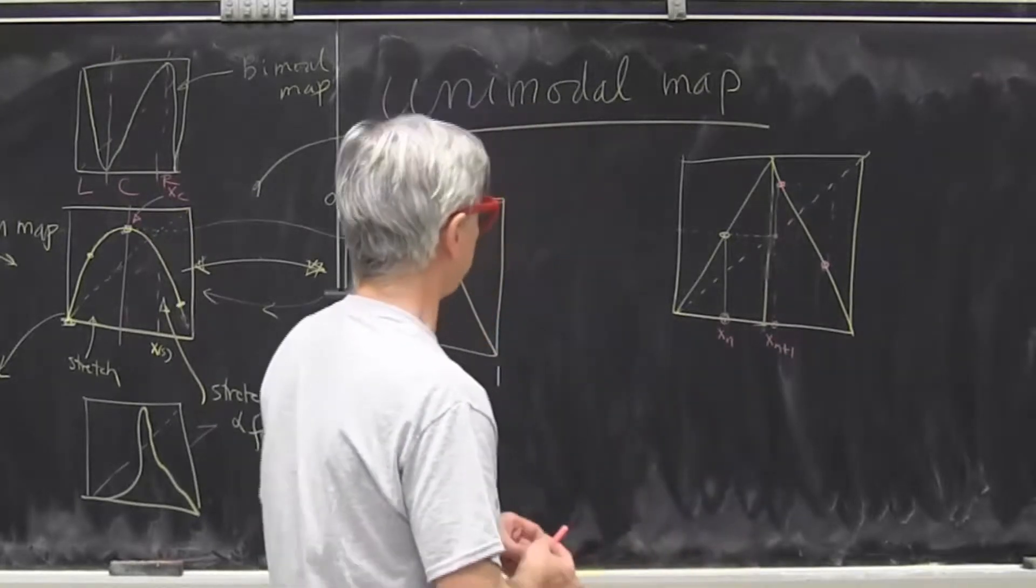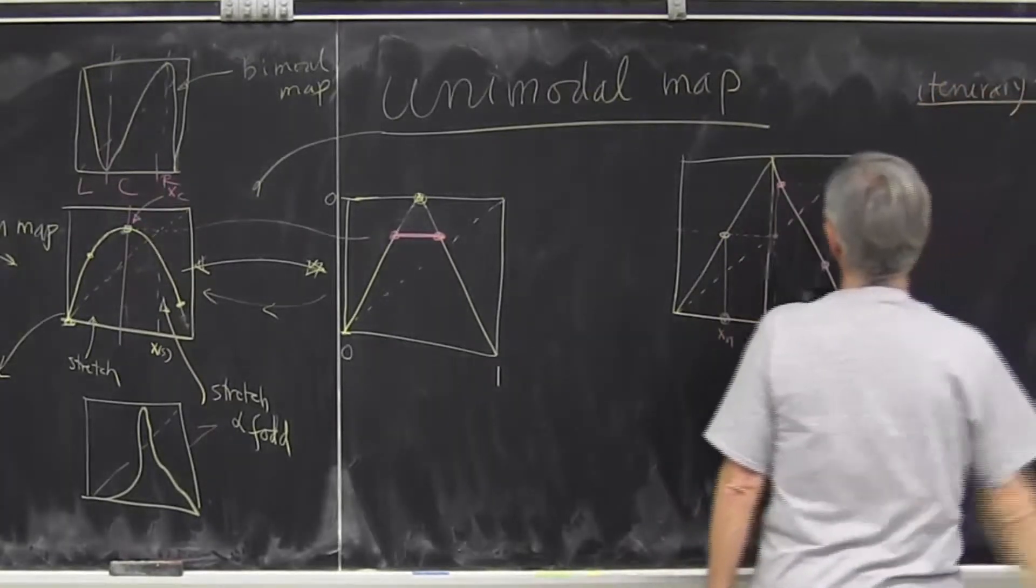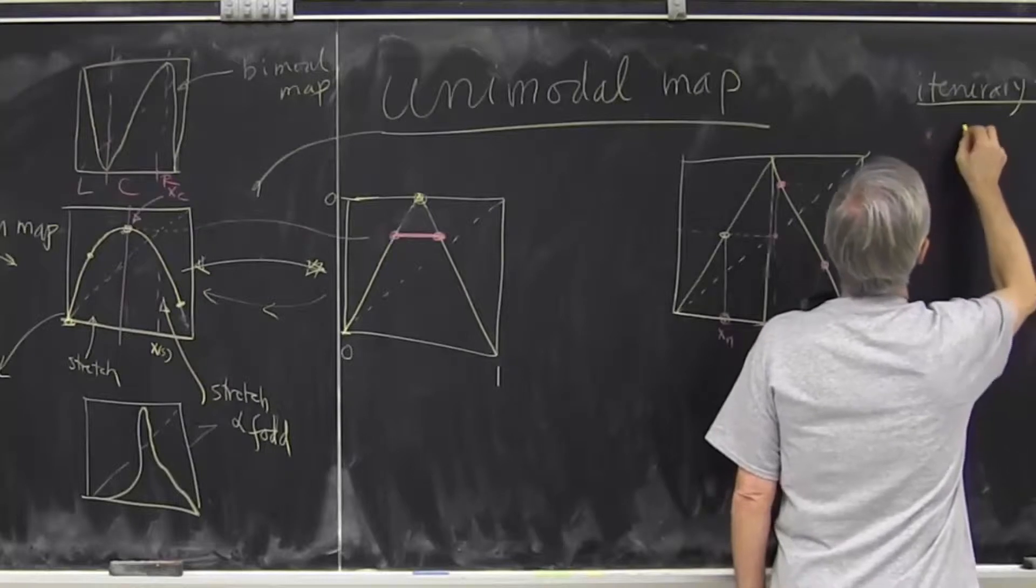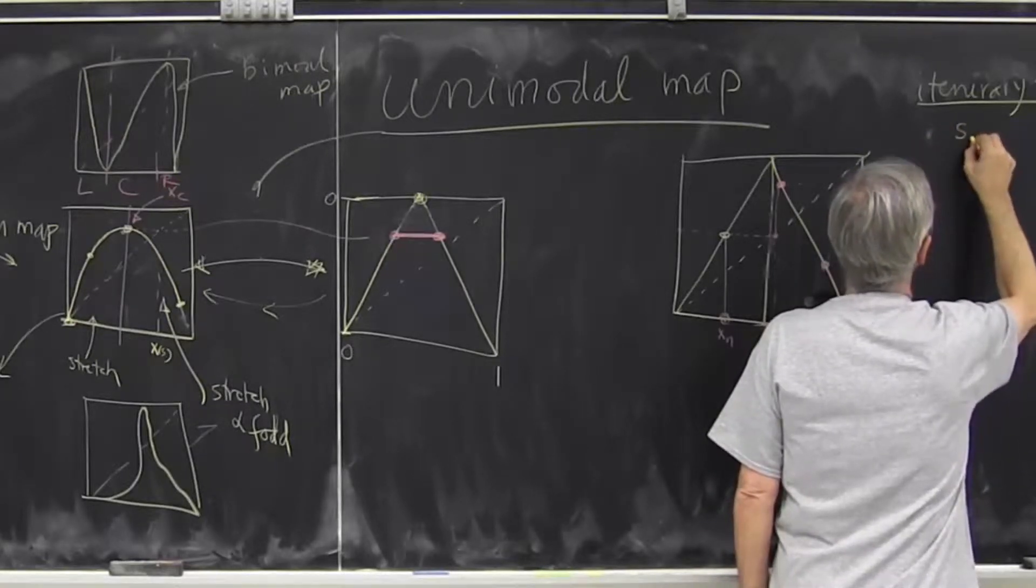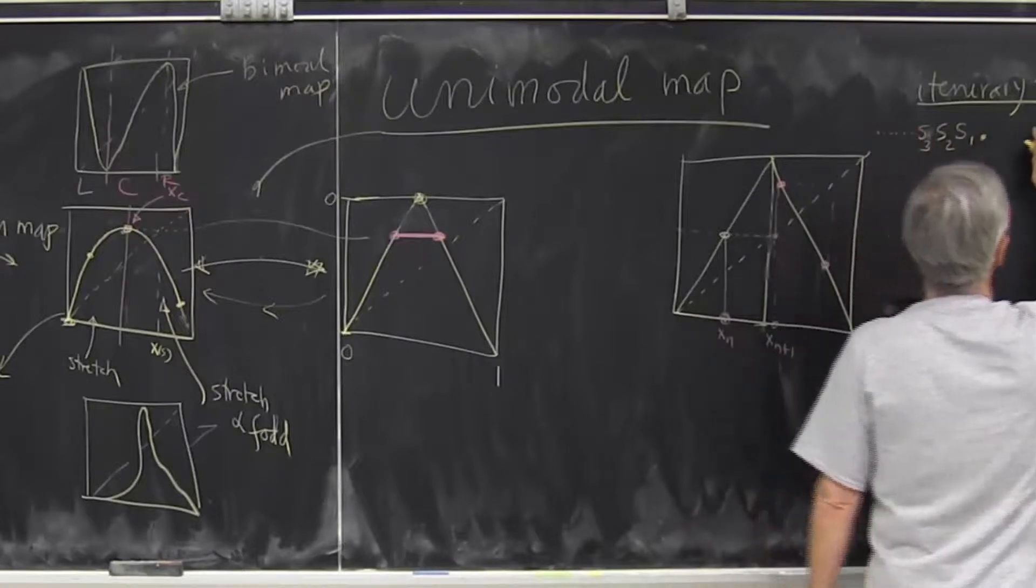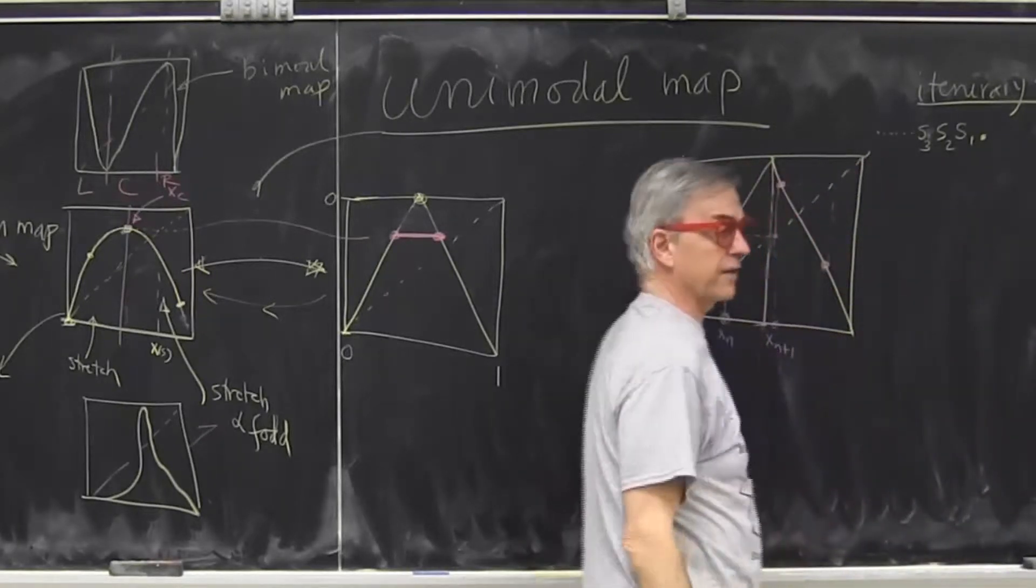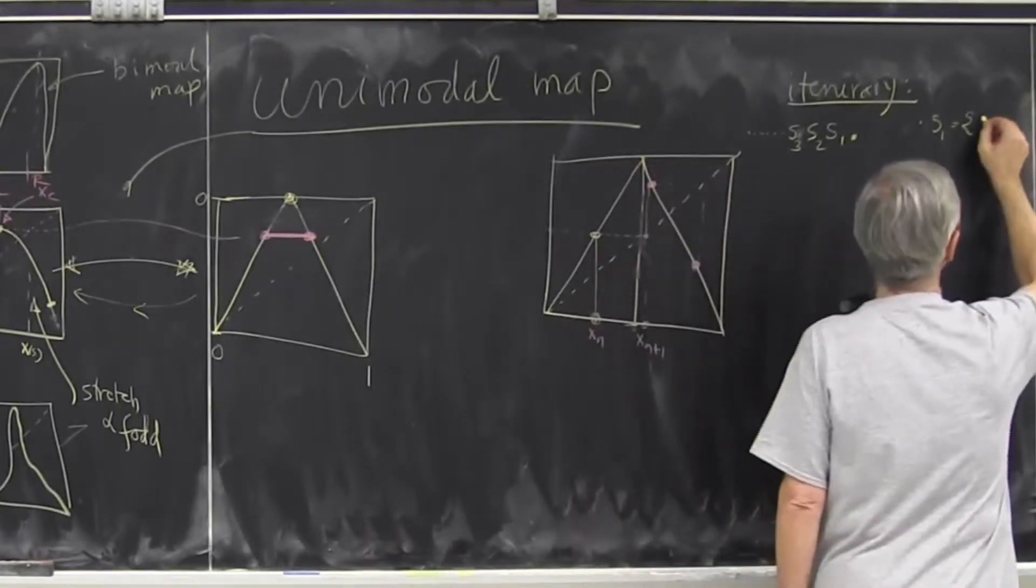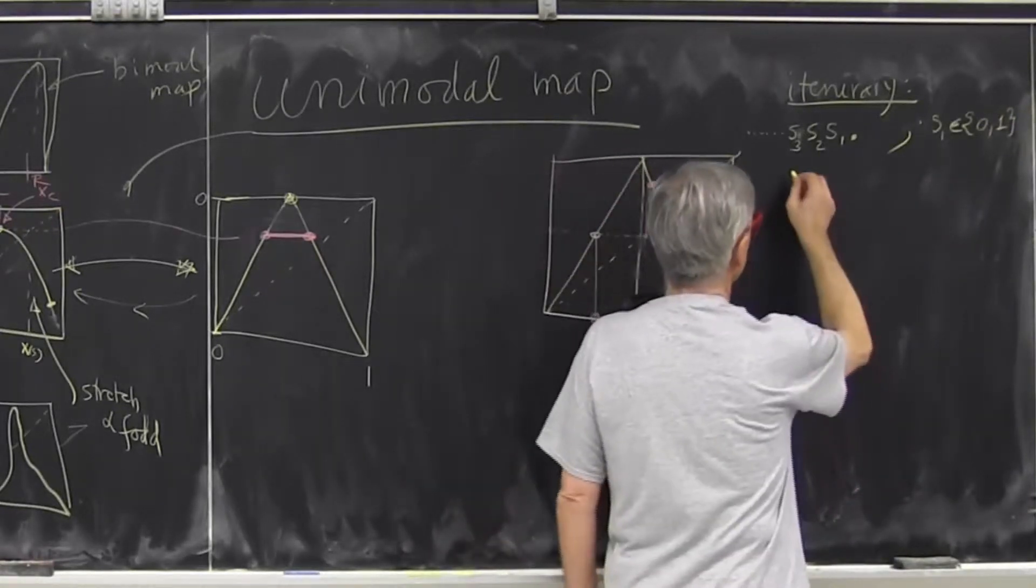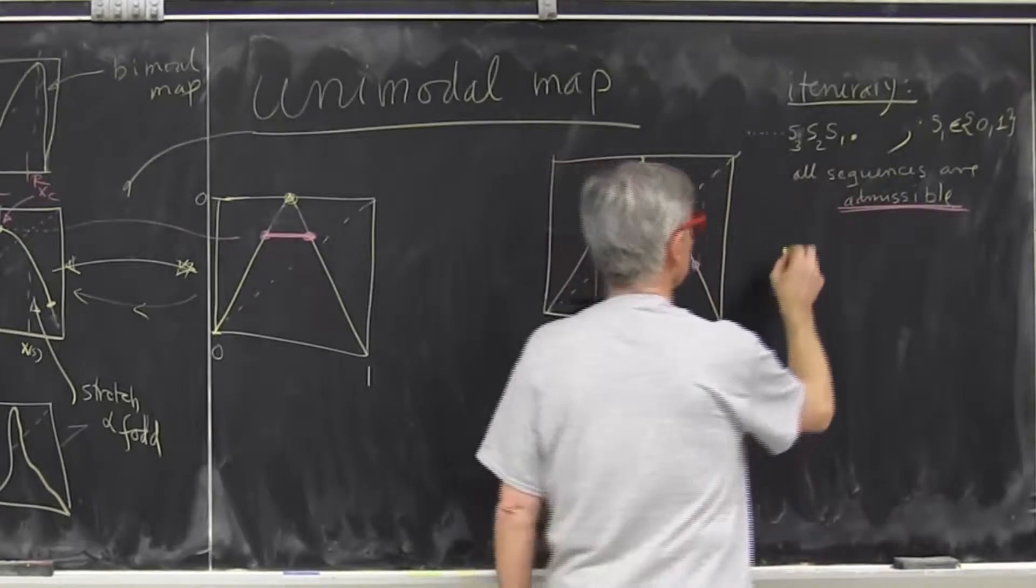And what's wonderful about the tent map, that I can specify every trajectory, the itinerary of every trajectory, which is the sequence forward in time of symbols. Where symbols, we find it convenient. We could call it left and right, but it turns out there's a very simple computational reason why you give them numerical values. Because we can actually do computations. And the tent map has a property that all sequences are admissible. Nothing is forbidden. No grammar rules.